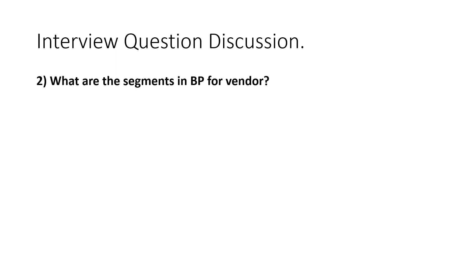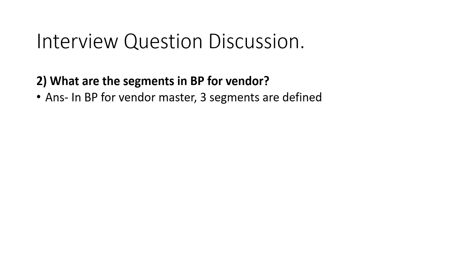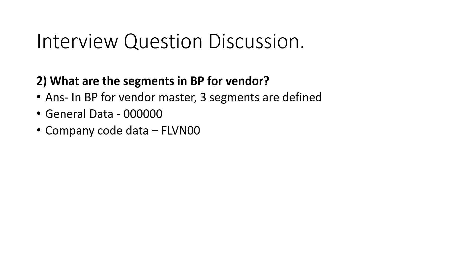Another question asked by interviewers is: what are the segments in the Business Partner for vendors? There are three segments for vendors in SAP S/4 HANA: General Data, Company Code Data (FLVN00), and Purchasing Data (FLVN01). These are the three segments introduced for creating a vendor as a Business Partner.